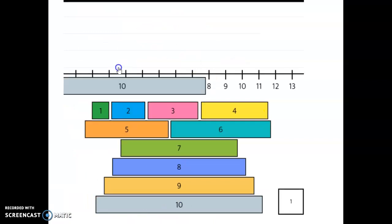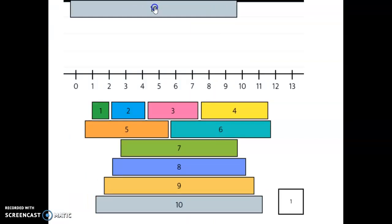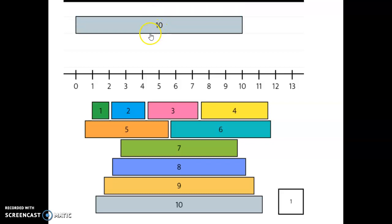So we know that Elsa has 10 snowmen built and Anna has 4 snowmen built. So we're trying to find how many goes right here.